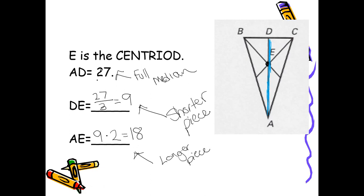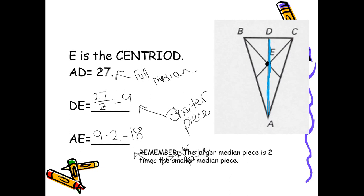They asked for the full median — that's what they gave me. They asked for the shorter piece, which is 9, and the longer piece, which is 18. You can do a double check: does 18 plus 9 give you the full median? It does, and it always should. So if you want to make sure you're doing it correctly, check that your pieces add up to the full median. Remember, the larger median piece is always 2 times the smaller median piece.